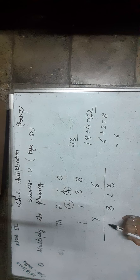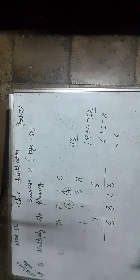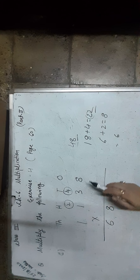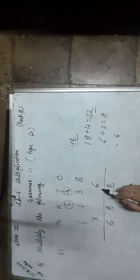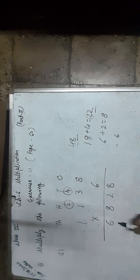Now, 1 × 6 is equal to 6, plus 2 carry over, equals 8 hundreds. We write 8 in the 100s place. Now, 1 × 6 is equal to 6. We write 6 in the 1,000s place. The product of 1,138 and 6 is 6,828.